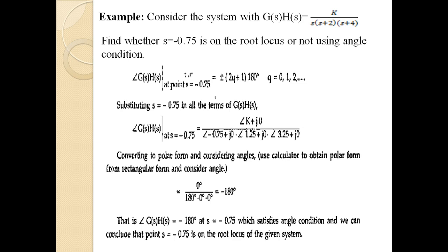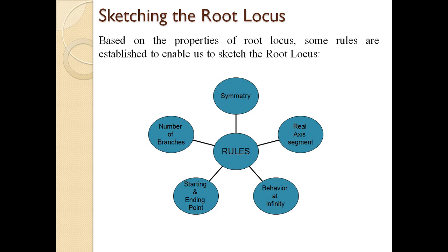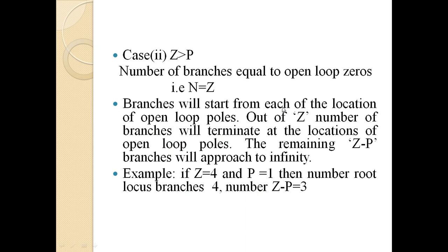The angle condition can be found using plus or minus (2q+1) × 180 degrees. If we get an odd multiple of 180 degrees, the given point lies on the root locus. We also discussed three basic rules: the first is symmetry — the root locus is symmetrical about the real axis. The second rule concerns the number of branches.